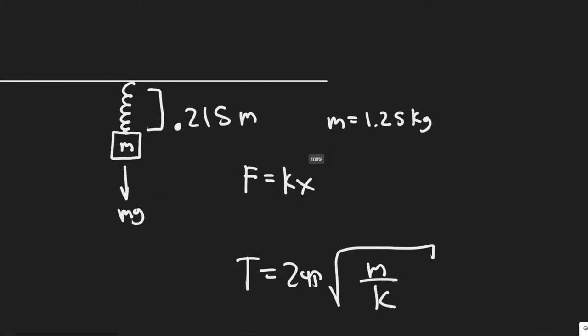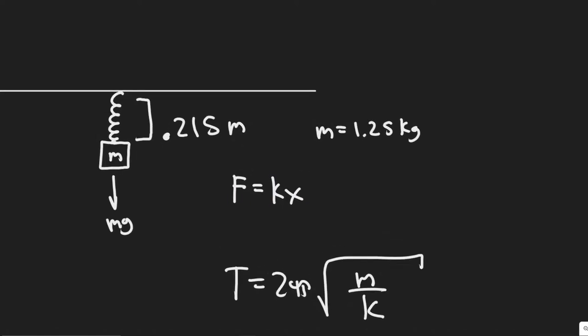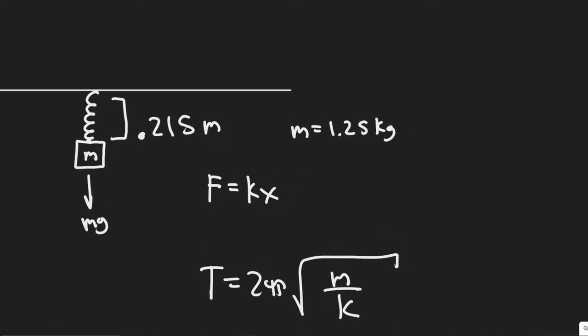Alright, so the first thing we need to do is find the spring constant k. So we know by Hooke's law, the force equals the spring constant times x, which is the displacement. So the first thing we have to do is solve for k because we're going to be using it in the rest of the problem. So I know k equals, if I divide both sides by x, essentially equals the force over the displacement.